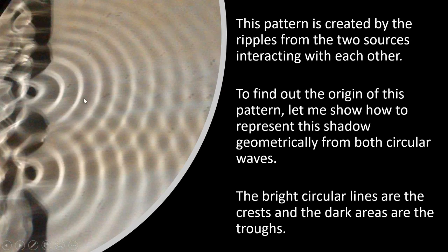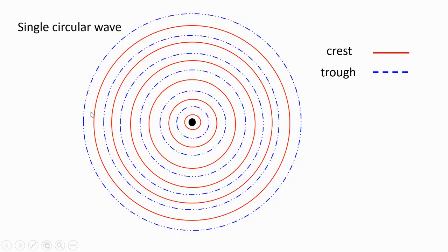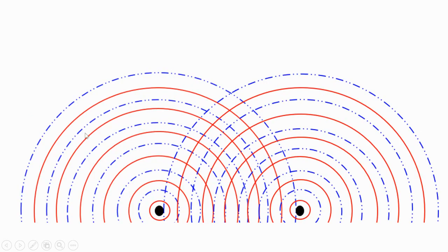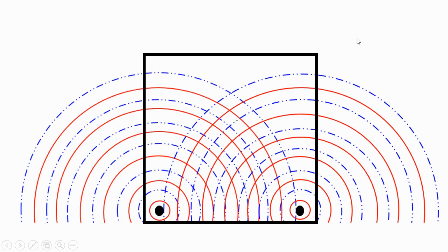The bright circular lines are the crests and the dark lines are the troughs. This is a single circular wave — the crest is represented by the red line and the trough is represented by the blue line. Now this picture shows two circular waves overlapping. This picture shows just the top part of the overlapping waves, and we are going to try to figure out why in this region we have dark and bright areas.